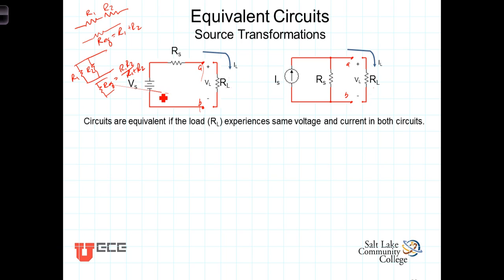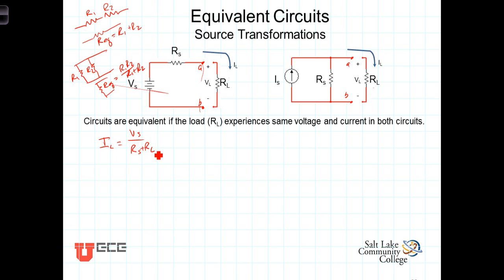To determine the relationship between V_S and I_S, let's write expressions for the current that the load resistance would experience in each circuit and set those equal to each other. On the left-hand side, I_L would simply be V_S divided by R_S plus R_L. On the right-hand side, the current through the load resistor can be determined using a current divider: I_L equals I_S times R_S over R_S plus R_L.